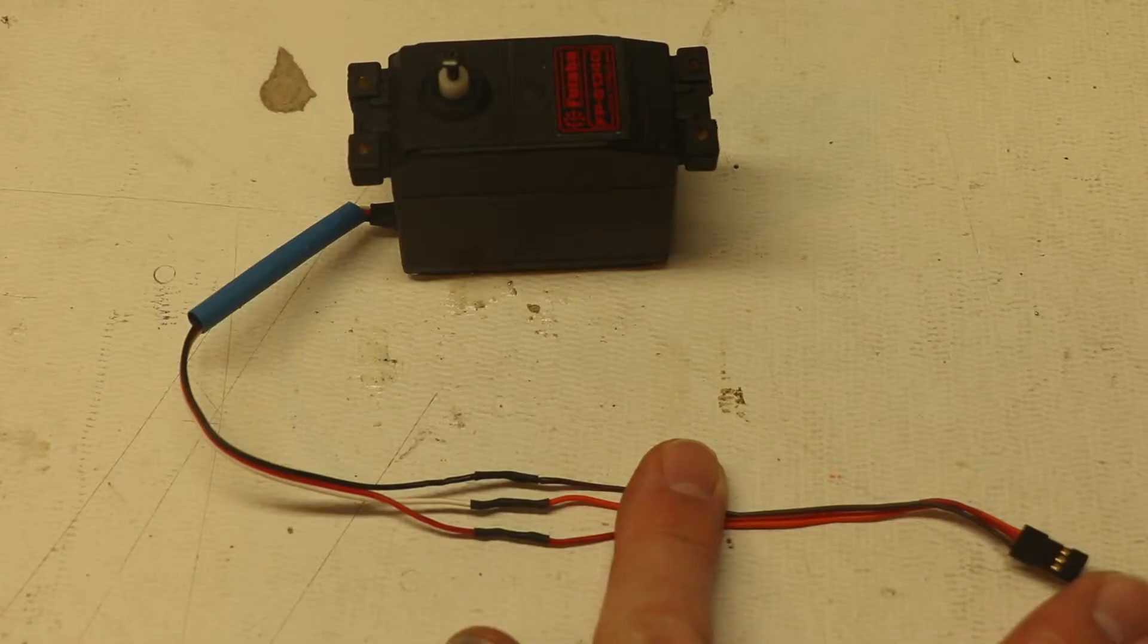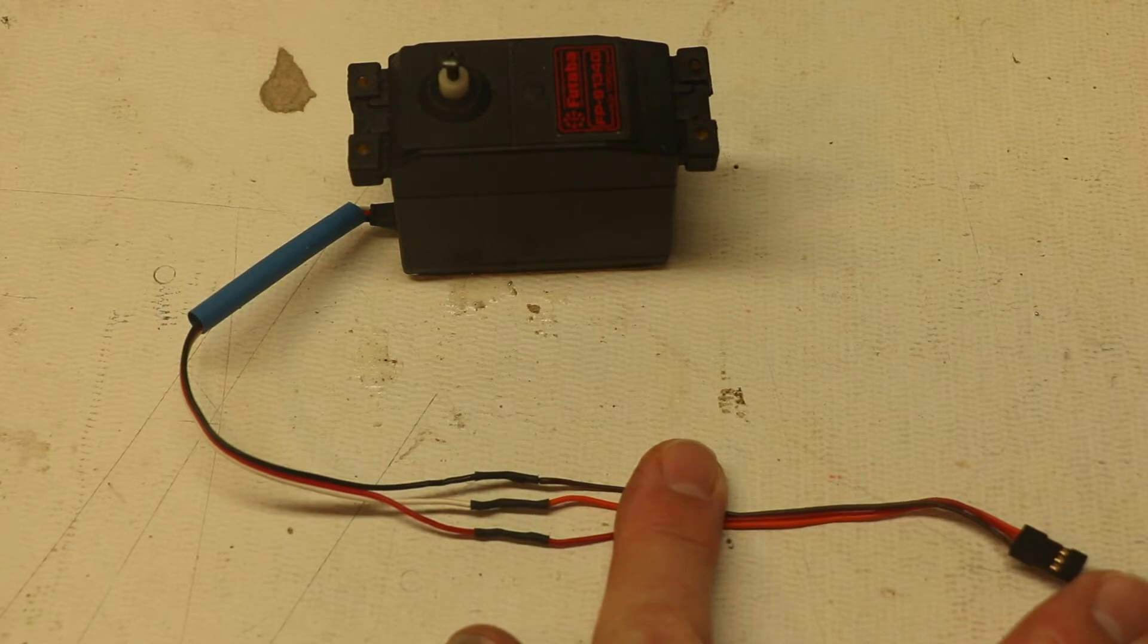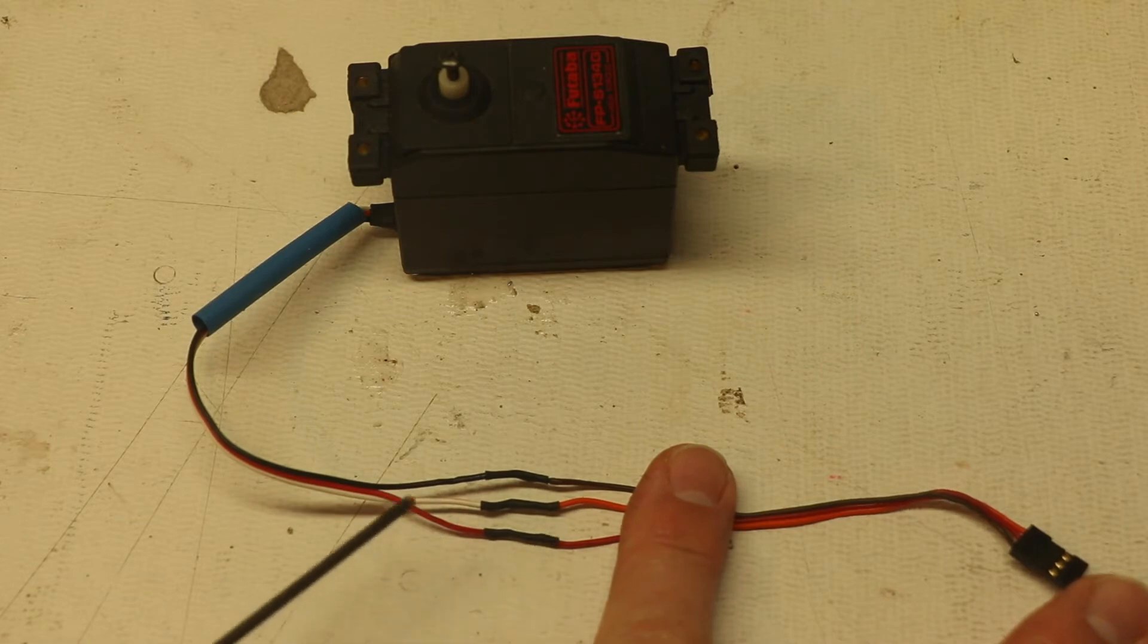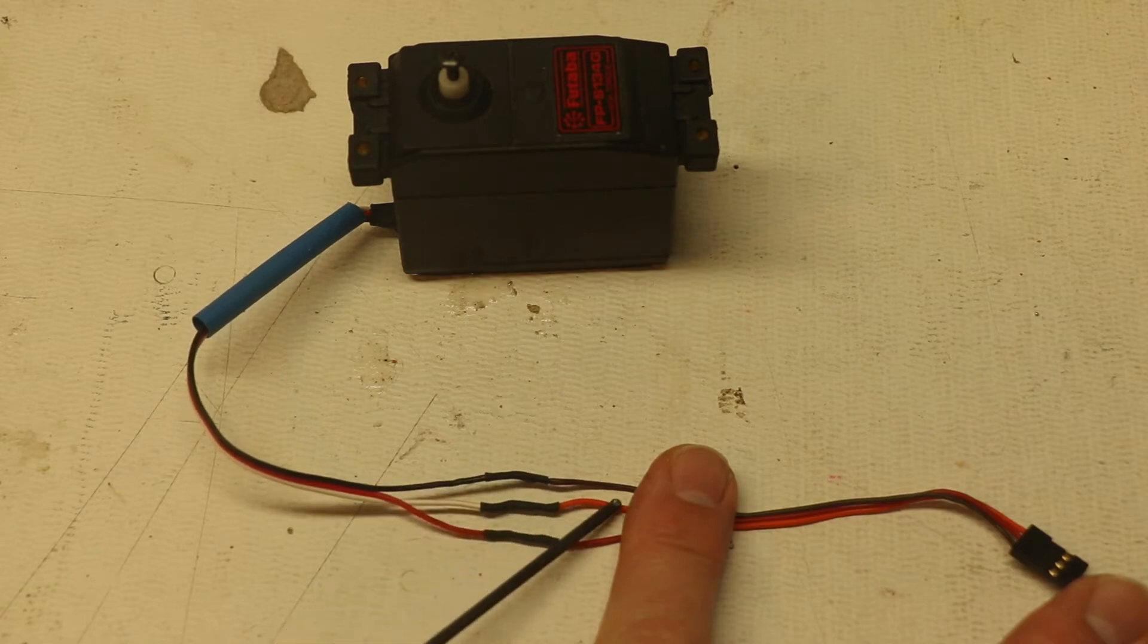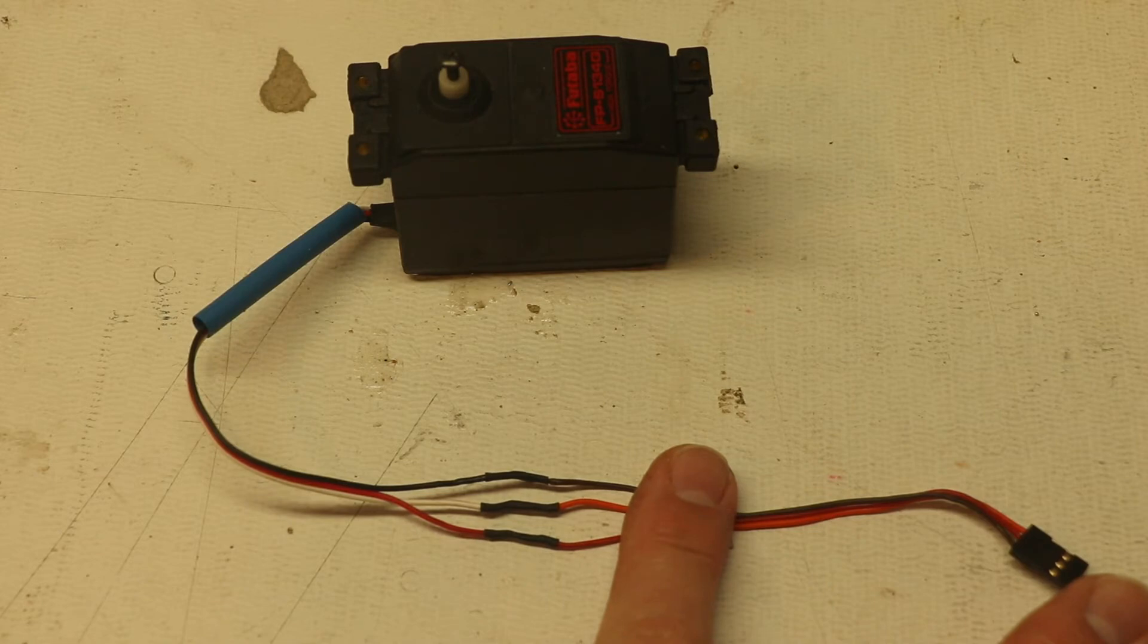Okay so this particular servo also needed a new connector. So what I did was I took this connector and I soldered it on. The black and the white and the orange are signal then the red is power. So that one's done ready to go.